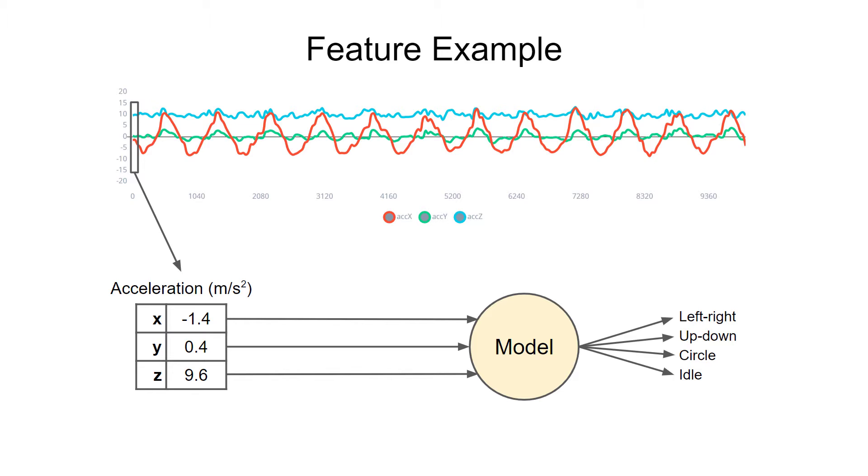These are actually pretty poor features because they do not take a time sequence into account. It's just a snapshot in time of what the accelerometer is seeing. The input to the model is just this snapshot. There's no information in these features about how the acceleration changes over time.